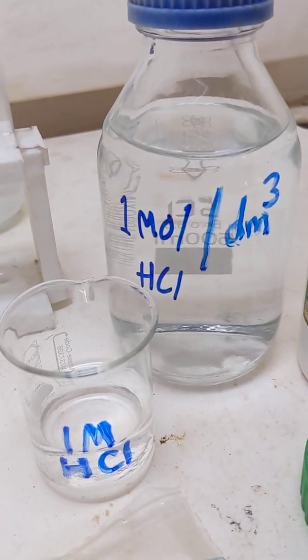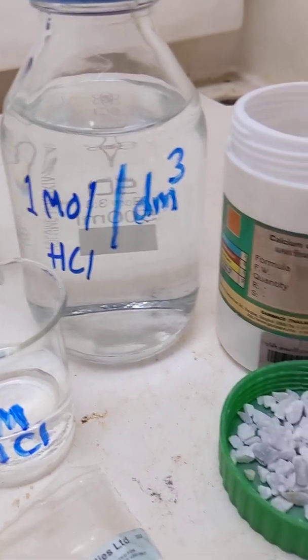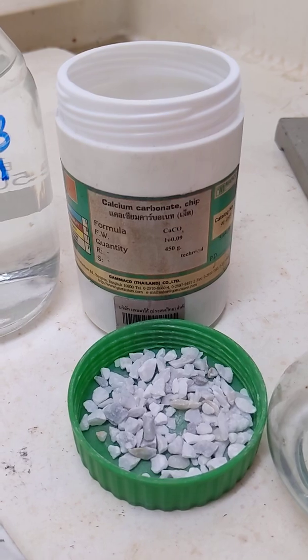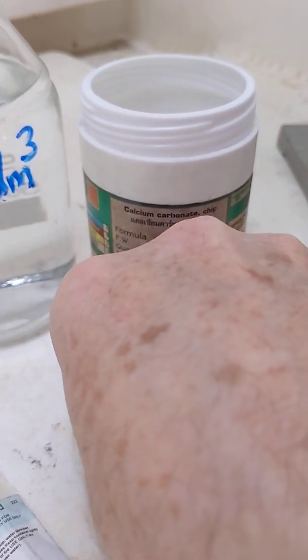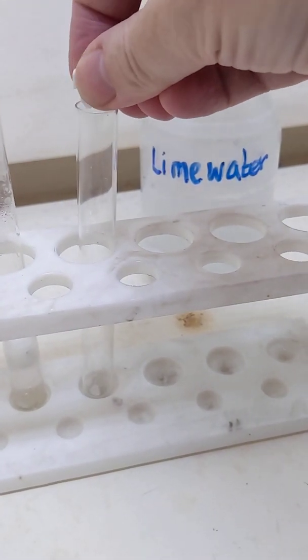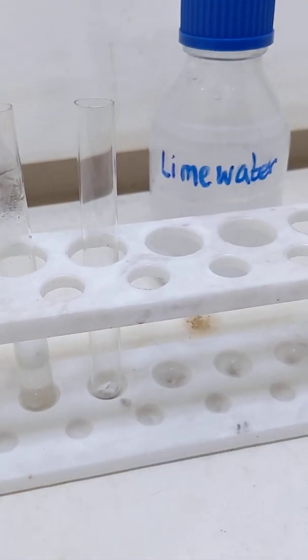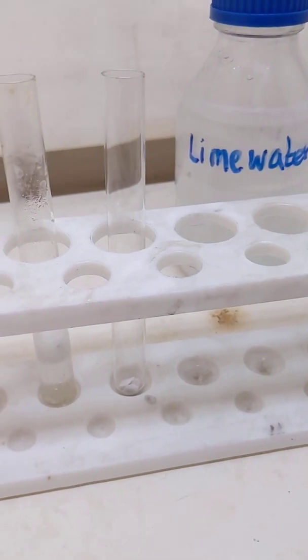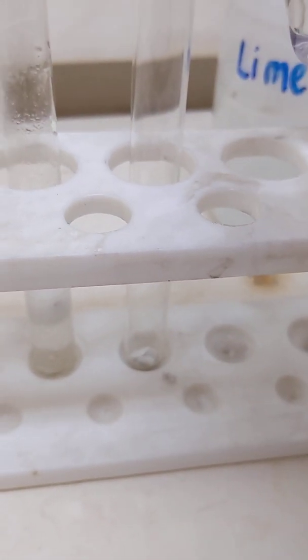Our next test with the hydrochloric acid is to use a carbonate. Here we've got some marble chips. Let's take some marble chips, introduce them into the tube, and again add some hydrochloric acid.